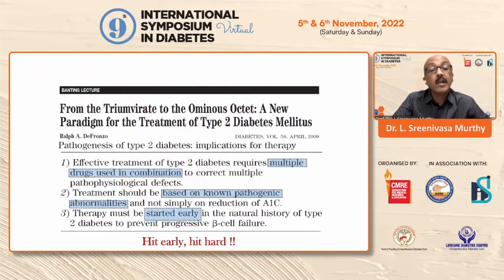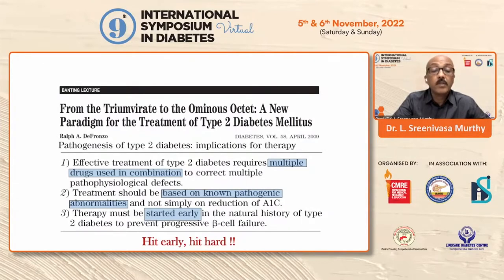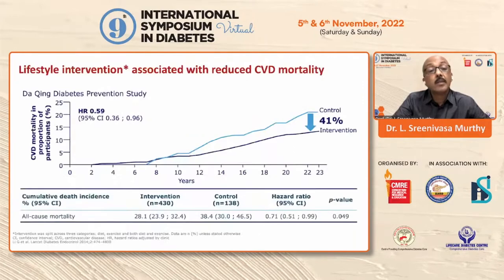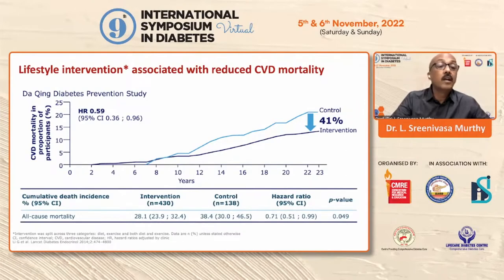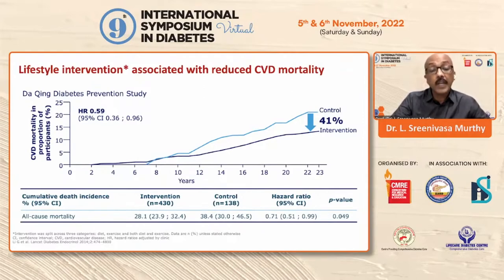This publication states: treatment should be based on non-pathogenic abnormalities, not simply a reduction of A1C, and therapy has to be started early in the natural history of diabetes to prevent progression of beta-cell failure — essentially, treat early and treat hard. This is a very important slide: lifestyle intervention is associated with reduced CVD mortality, which most of us do not emphasize to our patients. We only talk about drugs, but lifestyle modification is also a therapy which most of us fail to impart in our busy routine clinical practice.